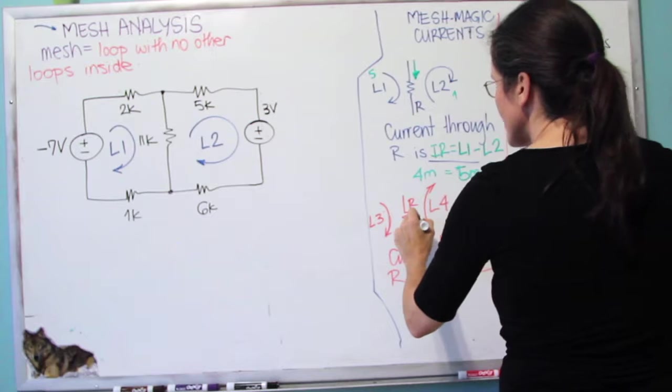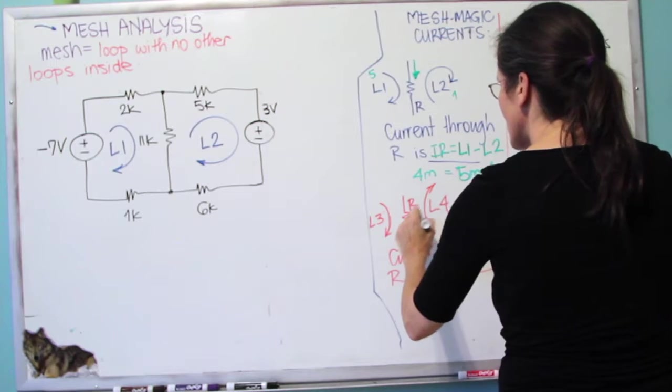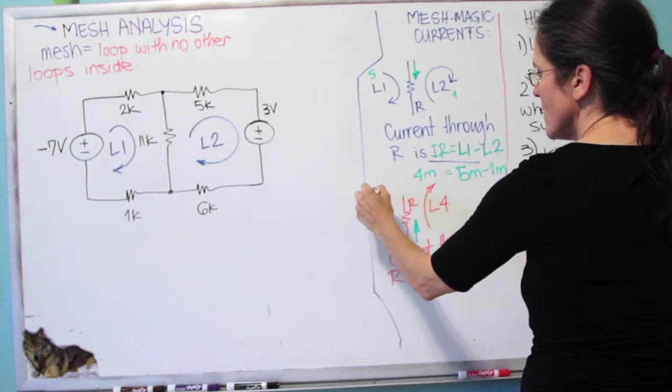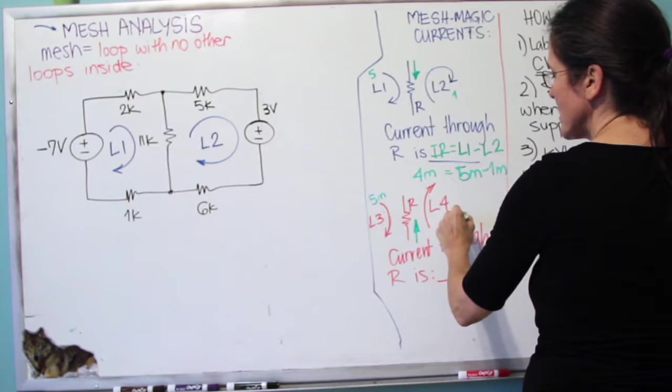Now let's say that we define the current on the resistor going up. And again, we have 5 milli here and 1 milli here.